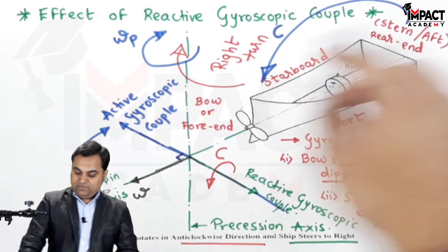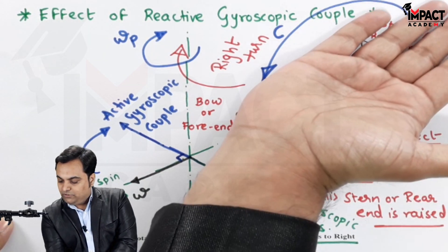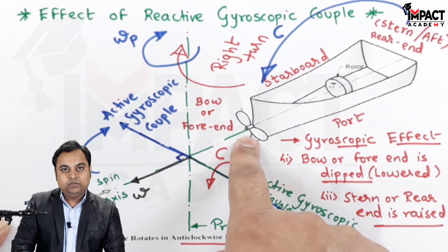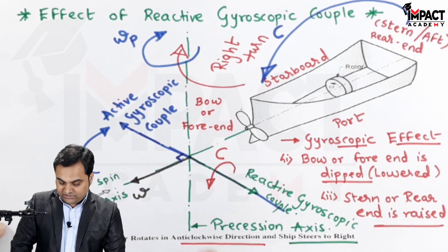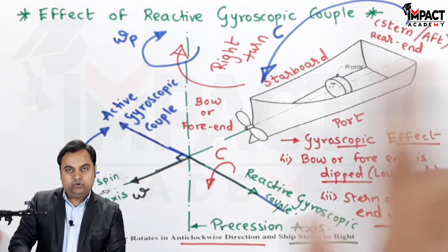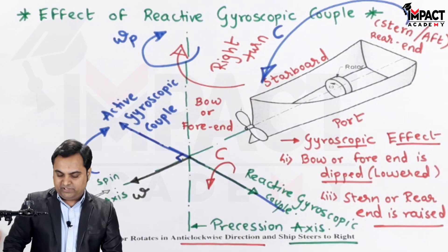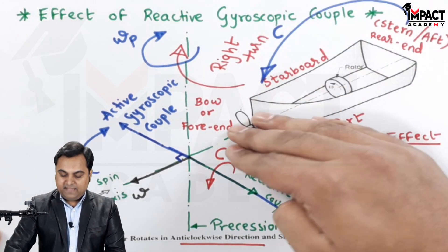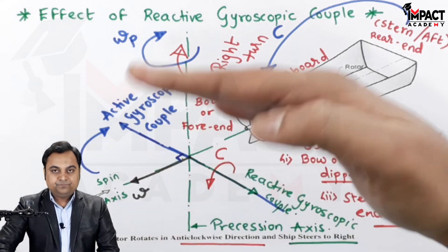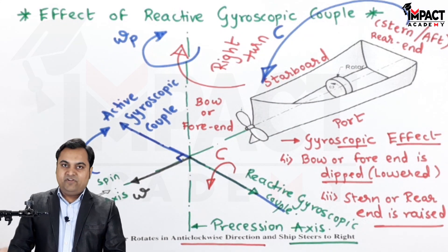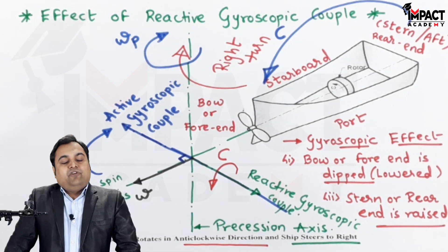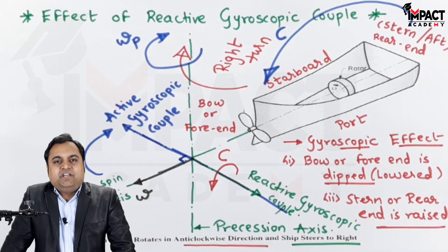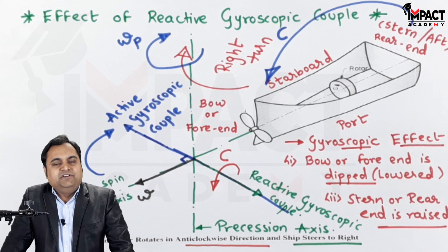The effect of this reactive gyroscopic couple is that the stern part would be lifted up and the fore or bow end would dip down. So when the rotor is rotating in an anti-clockwise direction and the ship is steering to the right, the stern lifts and the bow dips — that is the gyroscopic effect for the given conditions. If you find the videos useful, please like, share, comment, and subscribe. Thanks for watching.